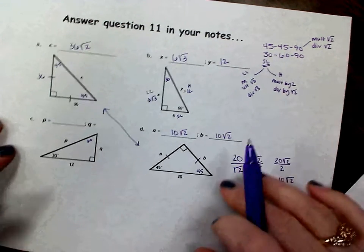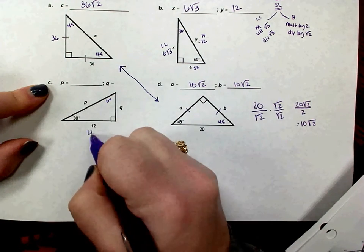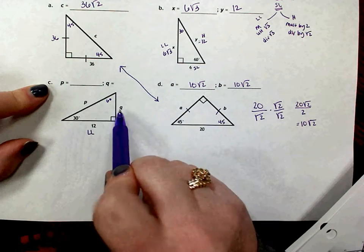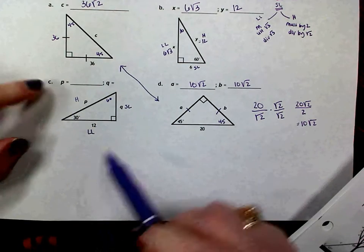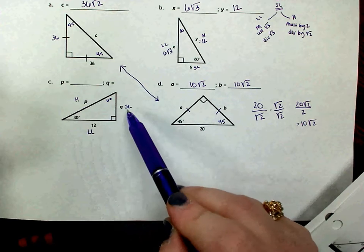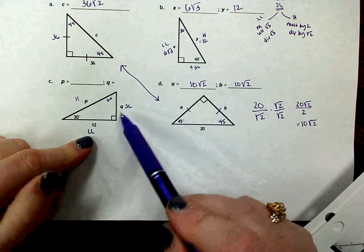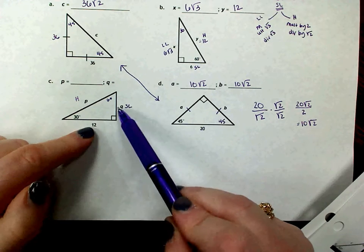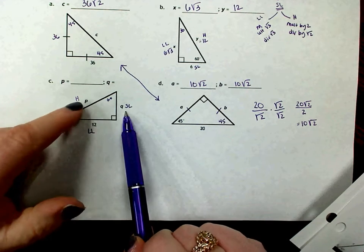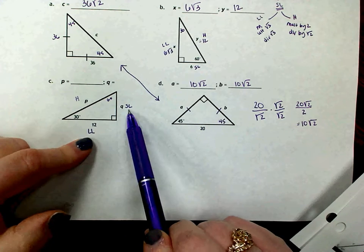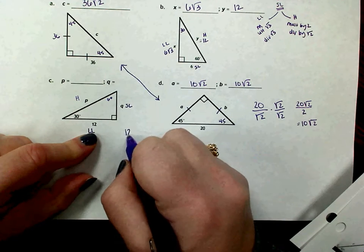Over here in part C, we're given the side across from the 60-degree angle — the long leg — and we have to find the short leg and the hypotenuse. Remember, you always go by way of the short leg. A common mistake is students see 12 and put 6 for the short leg, but there's no 2-to-1 relationship between the two legs — that relationship is between the short leg and the hypotenuse. To go from the long leg to the short leg, we divide by the square root of 3, not by 2.